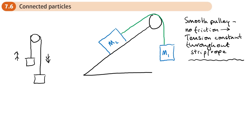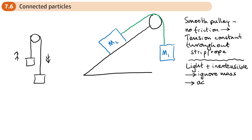If you see that the string is light and inextensible — so it doesn't stretch — that means we ignore its mass. But also in these questions it means that the acceleration is constant throughout the whole system. So acceleration is the same or constant in both masses, because they're going to be moving at the same speed. Smooth pulley means tension is the same; light and inextensible means acceleration is the same.